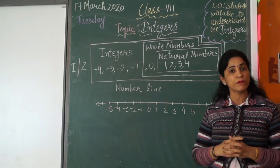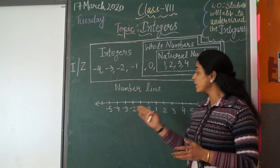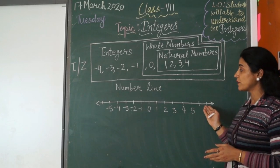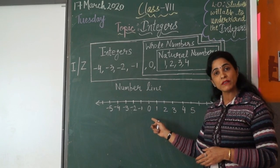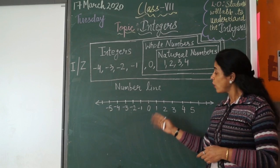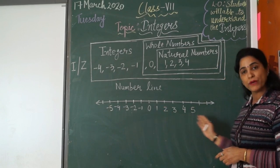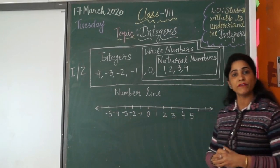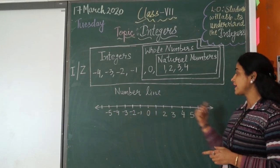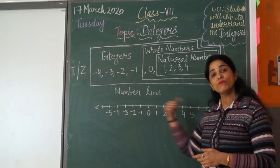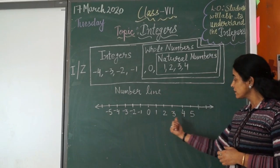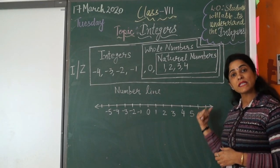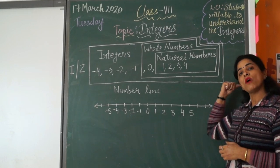Every integer can be represented by its position on the number line. Here we have a number line. You can observe that in the center of the number line we have 0. On the right of 0 we have all positive integers, and on the left of 0 we have all negative integers. The number line has arrows on both sides, which means the numbers continue — after 5 we have 6, 7, 8, and so on.